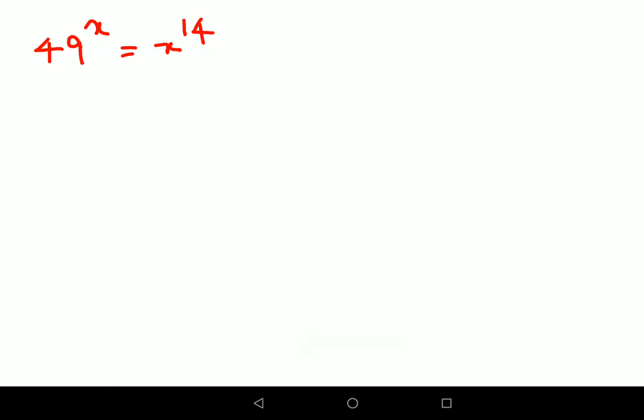Welcome everyone, so this is a very nice problem. I personally like this problem a lot. The problem is 49 raised to x equals to x raised to 14. Now if you look closely, 49 and 14 both of them can be written in terms of 7.